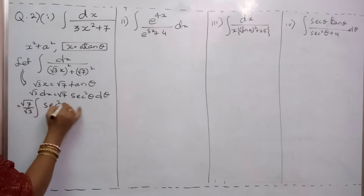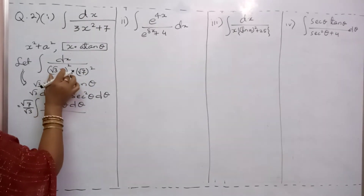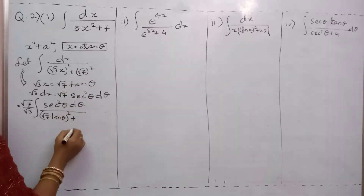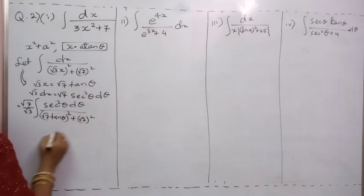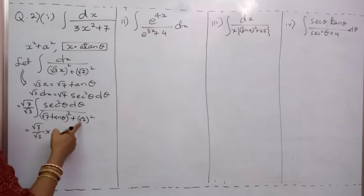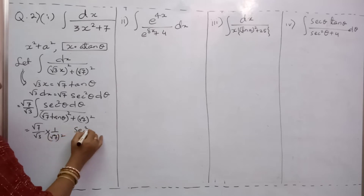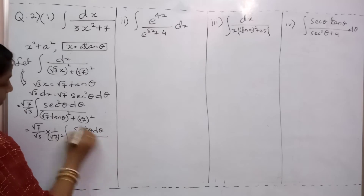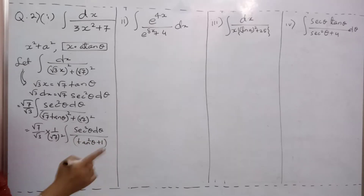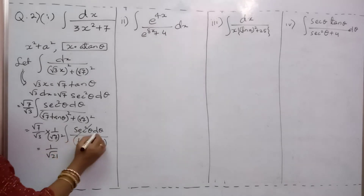Coming to the denominator part: denominator has (√3·x)², so I will write (√7 tan θ)² plus (√7)². Now check: √3/√7 · √7/√3 — in the denominator √7·√7 is common, that is squared, so take it outside as √7². Now in the numerator it is sec²θ dθ, divided by denominator tan²θ + 1. What is tan²θ + 1? It is sec²θ. So these cancel.